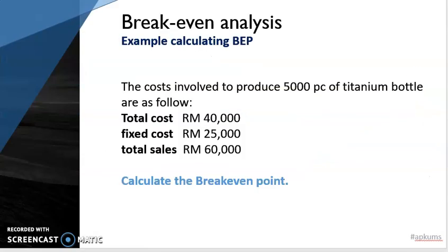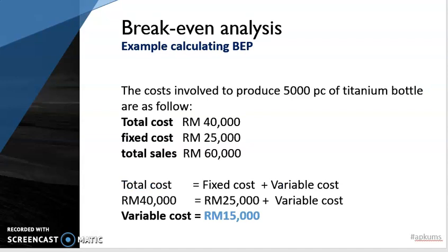Let's look at one example. A company is trying to sell 5,000 units of titanium bottles. The total cost of these 5,000 units is 40,000 ringgit, fixed costs are 25,000 ringgit, and total sales are 60,000 ringgit. To calculate the break-even point, we first need the variable costs. Variable cost equals total cost minus fixed cost, which gives us 15,000 ringgit.